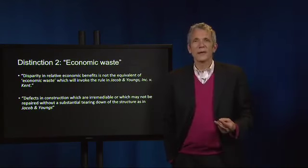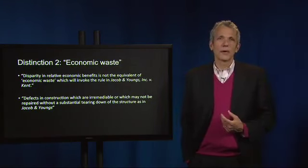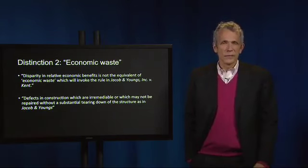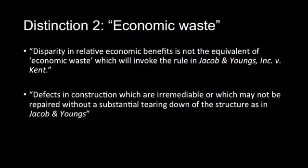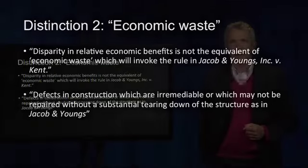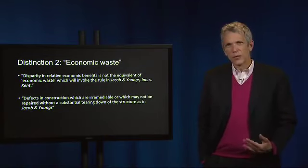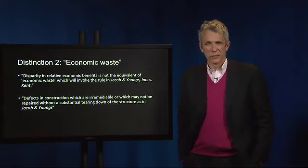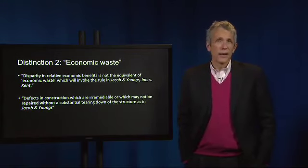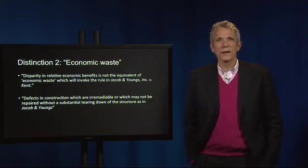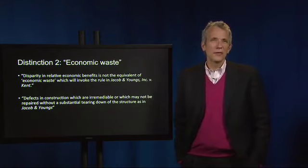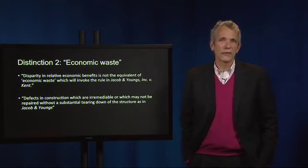The court's second main argument is about what counts as economic waste for purposes of Jacob and Young's. In this case, the court tells us that disparity in relative economic benefits is not the equivalent of economic waste, which was invoked in Jacob and Young vs. Kent, but it doesn't really give us a satisfying substitute rule. Instead, it counters with the principle from Chamberlain vs. Parker that a landowner is allowed to build a monument to his caprice or folly, and that the court will still enforce a contract even where performance would diminish the market value of the owner's land.